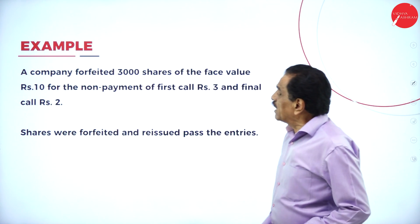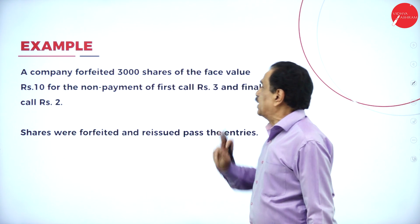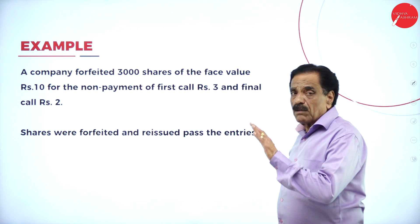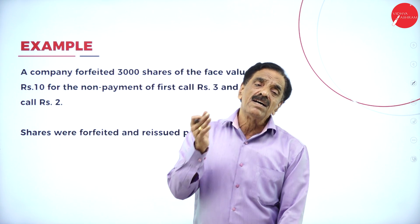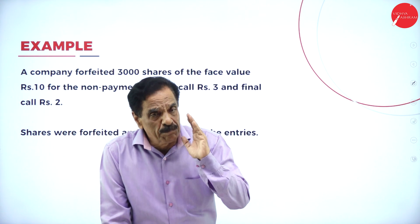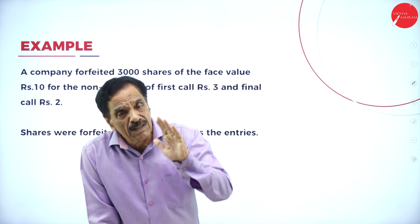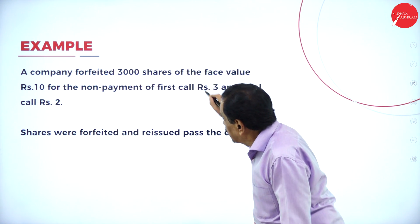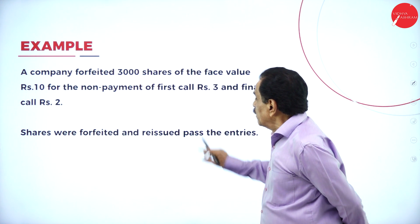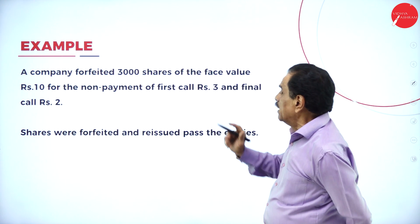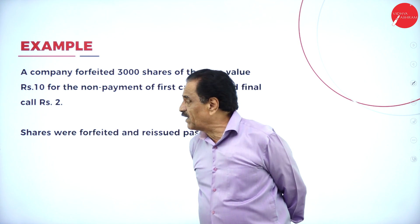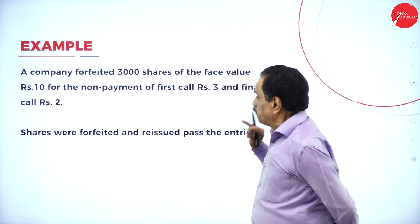Problem 3: A company forfeited 3,000 shares of face value ₹10 for the non-payment of first call ₹3 and final call ₹2. Total not paid: ₹5. Already paid on application and allotment: ₹5. So 3,000 × ₹10 = ₹30,000. Shares were forfeited and reissued at ₹8. Pass the entry.